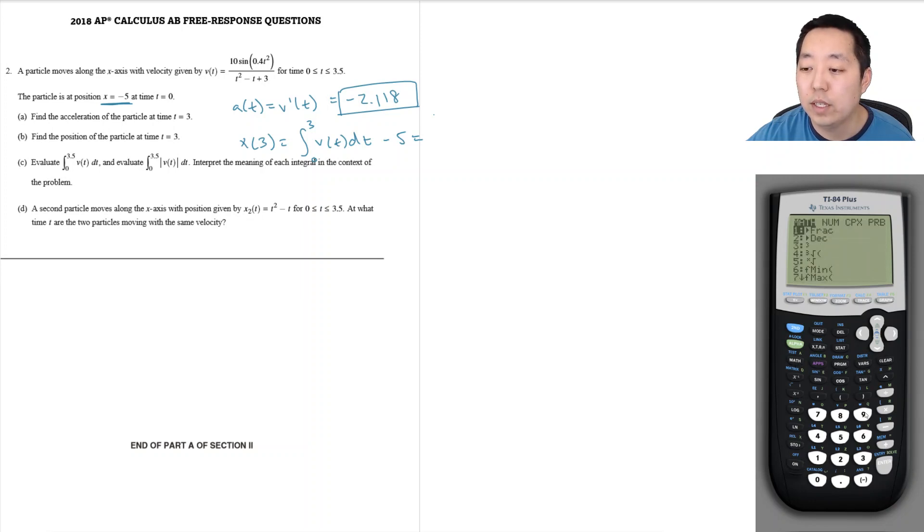Actually, we just do math 9. So integral v of t is 10 sine 0.4x squared divided by x squared minus x plus 3, with respect to x. We're evaluating at 3.